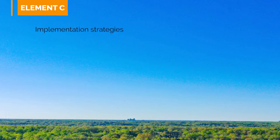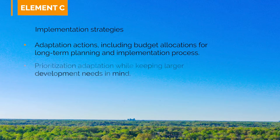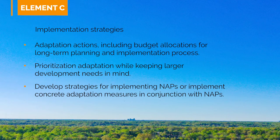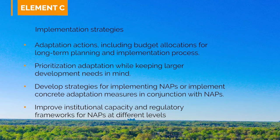Element C: Implementation strategies. During this element, the emphasis shifts to adaptation actions including national and local budget allocations, which can be prioritized within the country's long-term planning and implementation process. Key questions include how to prioritize adaptation work at the national level while keeping larger development needs in mind, what the potential implementation costs are, and how these expenses will be met. Countries may develop strategies for implementing NAPs or implement concrete adaptation measures in conjunction with NAPs, and will work to improve institutional capacity and regulatory frameworks at the national, sectoral, and subnational levels.